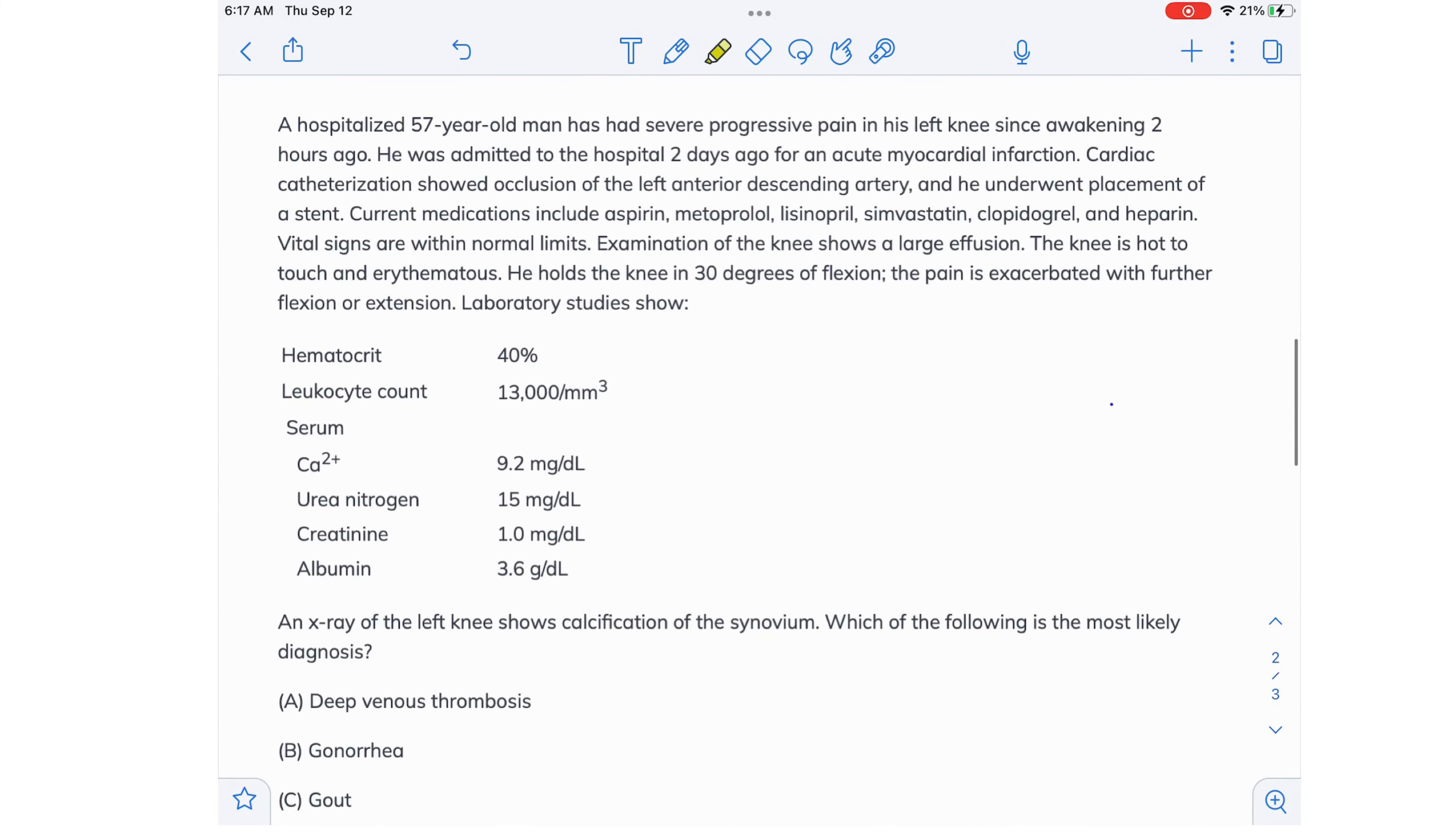Which of the following is the most likely diagnosis? A hospitalized 57-year-old man has had severe progressive pain in his left knee since awakening two hours ago. He was admitted to the hospital two days ago for an acute MI. So a 57-year-old man has been admitted to the hospital for an acute MI two days ago, and now he all of a sudden develops left knee pain.